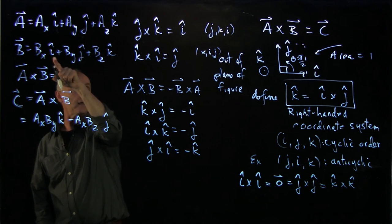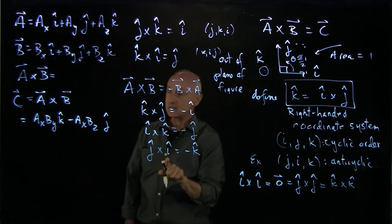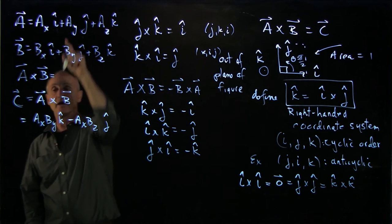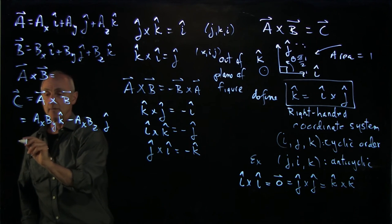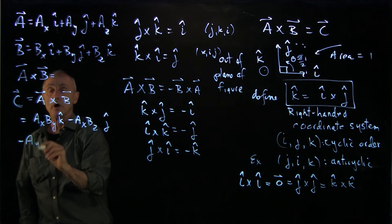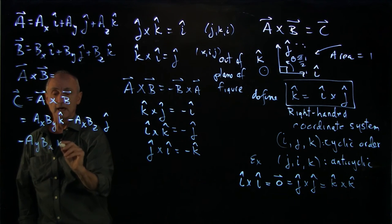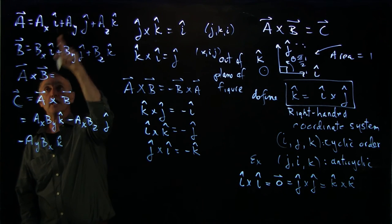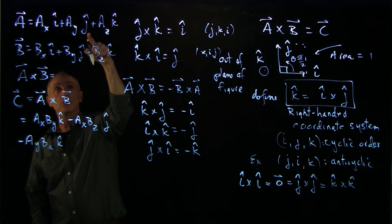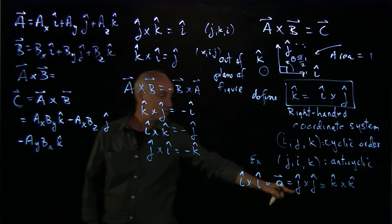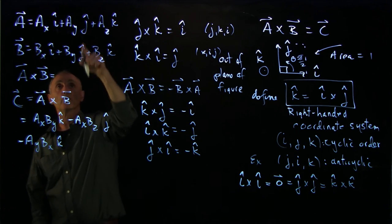j hat cross i hat. That's anti-cyclic. So we have minus ay bx k hat. ay j hat cross bx i hat. j hat cross j hat. That's 0. So we have no contribution there.